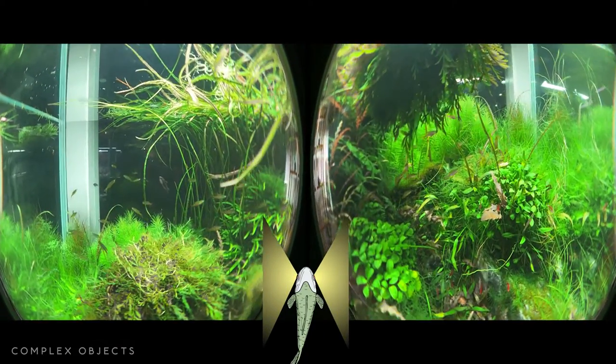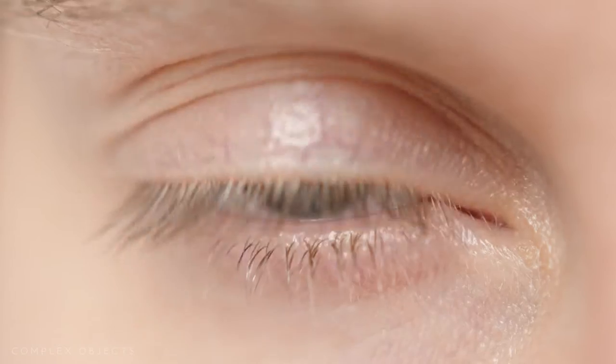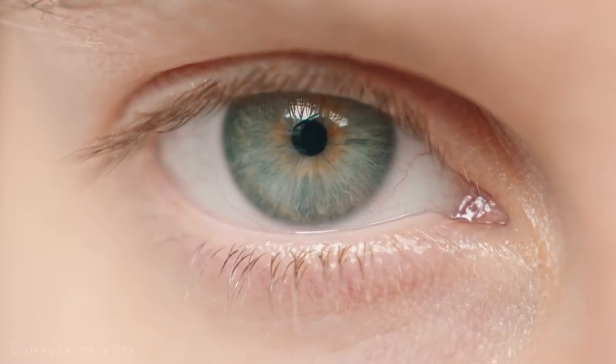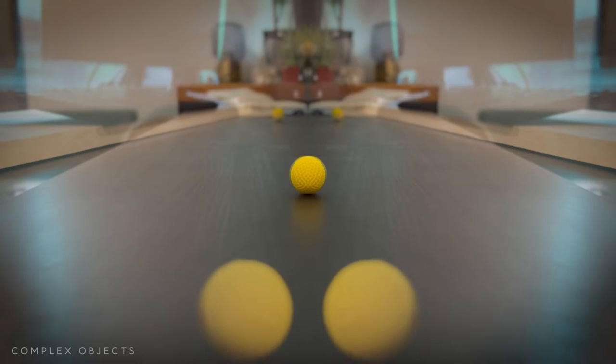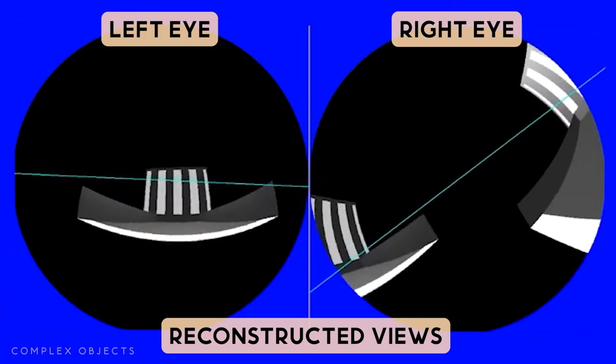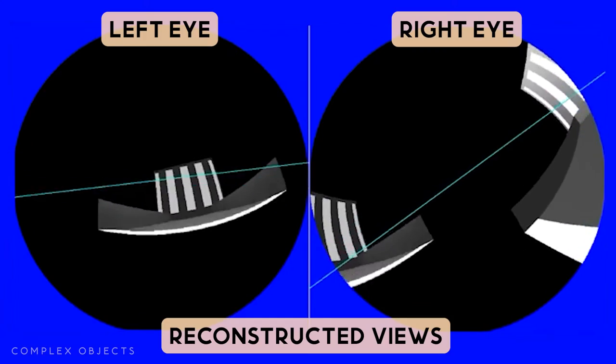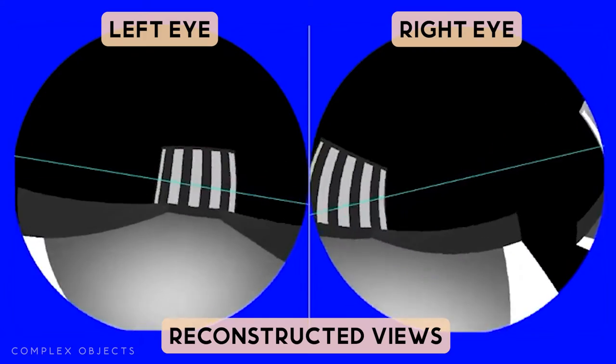But before diving into how fish see, we need to break down how humans see for comparison. Humans use something called binocular vision, while fish use lateral vision. And those are completely different ways of perceiving reality.